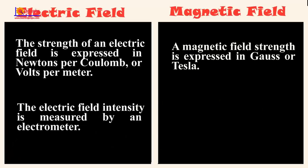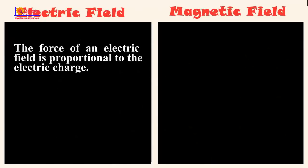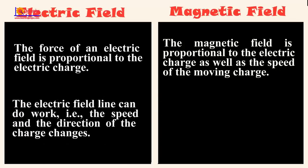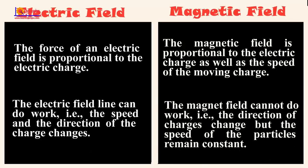The force of the magnetic field is measured by an electric field. The force of an electric field is proportional to the electric charge, while the magnetic field is proportional to the electric charge as well as the speed of the moving charge. The electric field line can do work, that is, it changes the speed and direction of charges, whereas the magnetic field cannot do work — it changes the direction of charges but the speed of the particles remains constant.